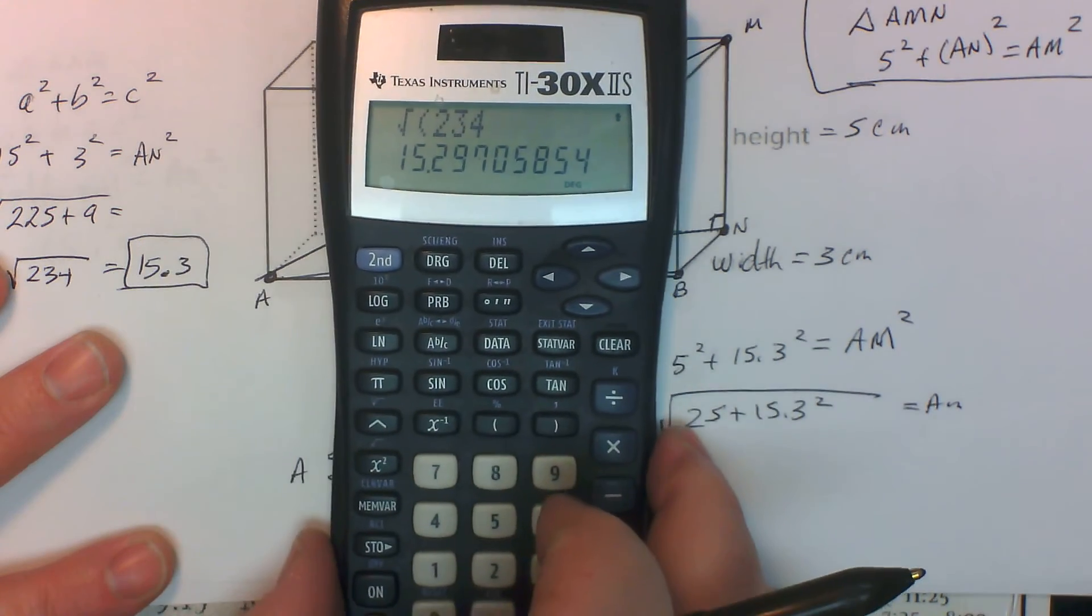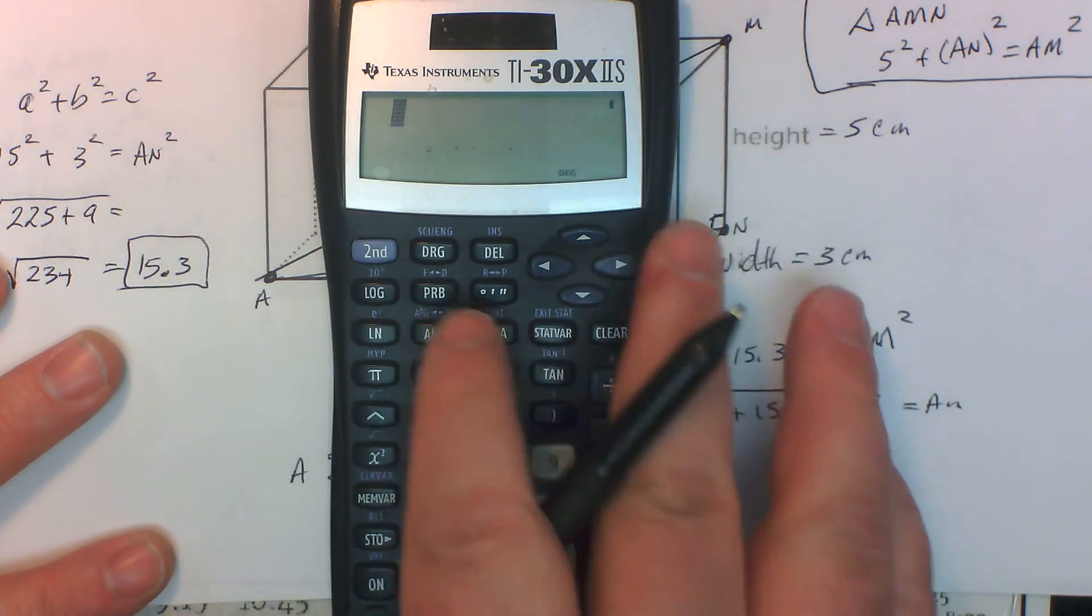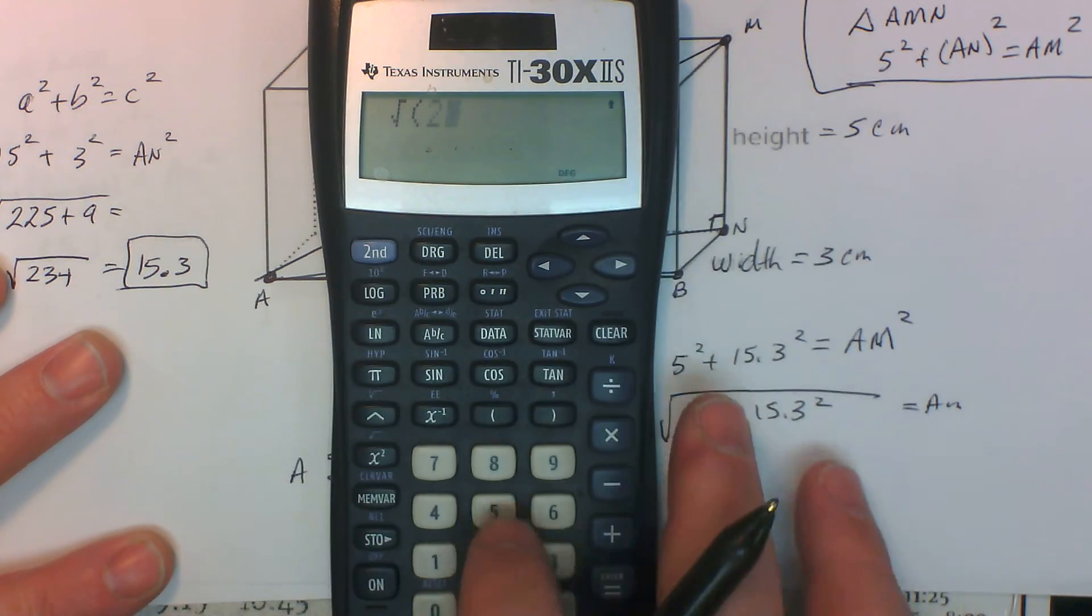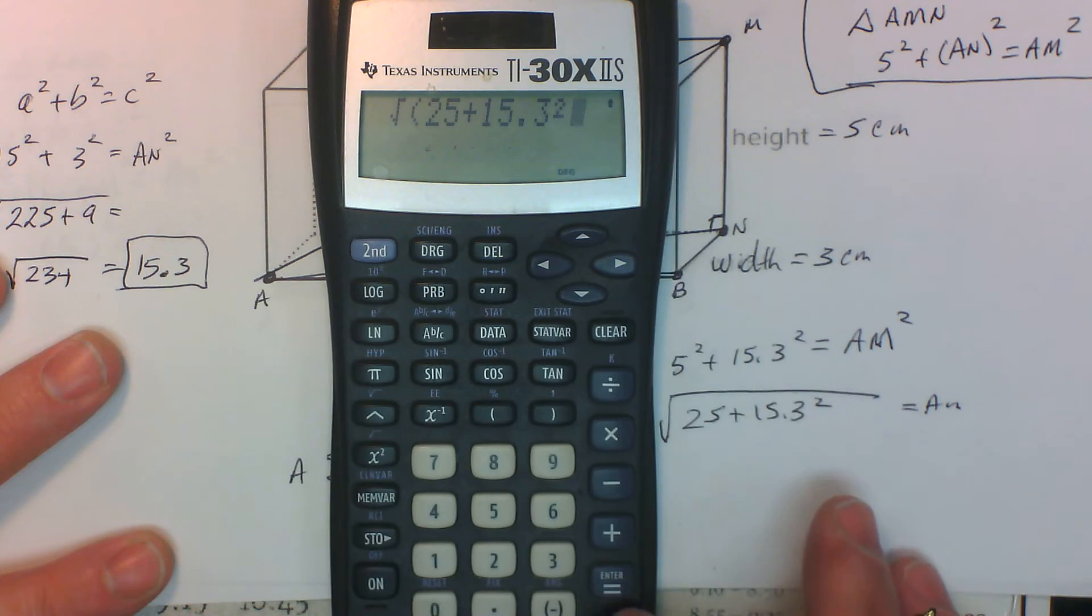Now you do have to be careful that you use your calculator correctly. So we have the square root of 25 plus 15.3 squared.